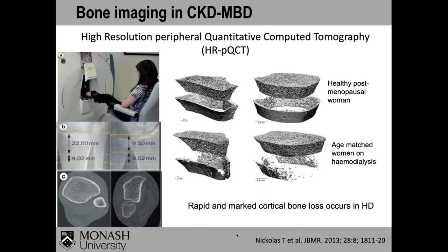High-resolution peripheral quantitative CT is very useful, examining the distal tibia and distal radius. In CKD patients — particularly haemodialysis patients — there is rapid and marked cortical bone loss. Compared with an age-matched control, there can be almost complete loss of cortical bone in this situation, dramatically illustrating the high degree of cortical bone loss in late-stage CKD and during dialysis.